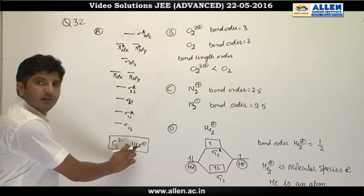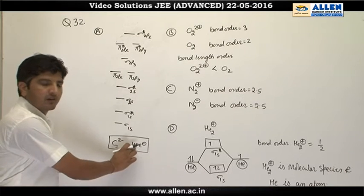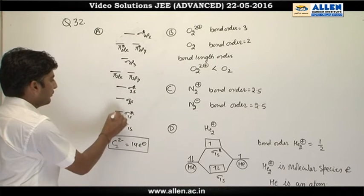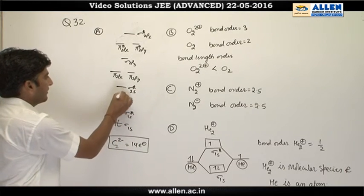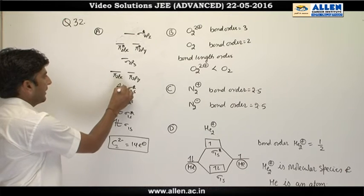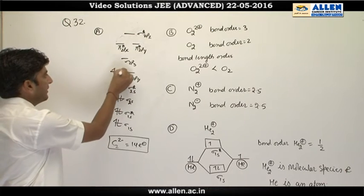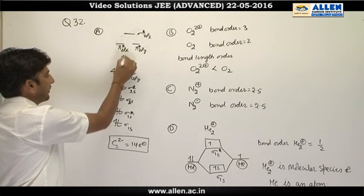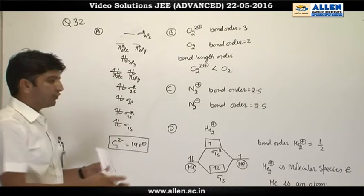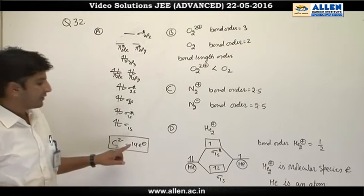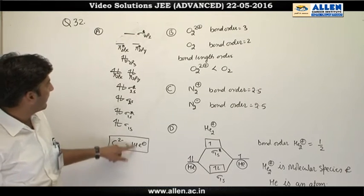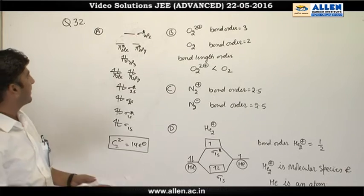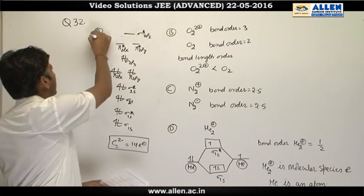C₂²⁻ contains 14 electrons. Filling all 14 electrons into molecular orbitals, C₂²⁻ does not contain any unpaired electrons. So C₂²⁻ is diamagnetic. This statement is correct.